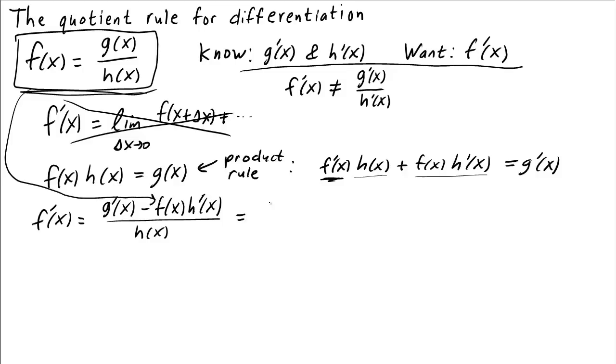then we get that the derivative is g prime of x minus g of x over h of x times h prime of x all over h of x. This is now a valid formula for the derivative of f prime of x in terms of g and h and their derivatives.